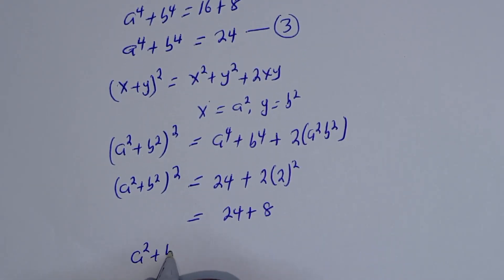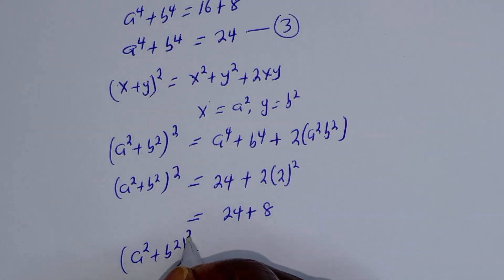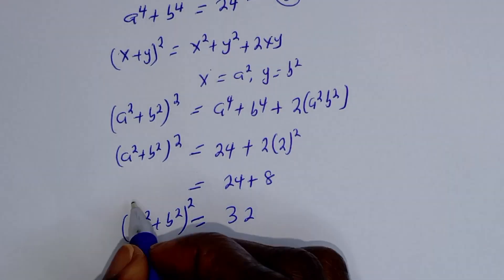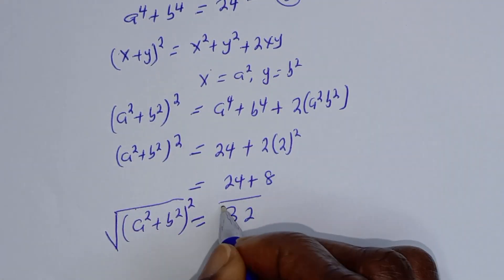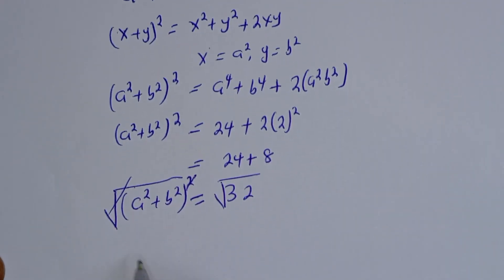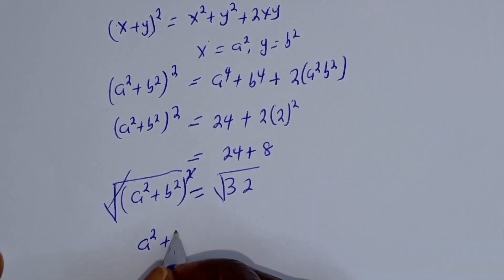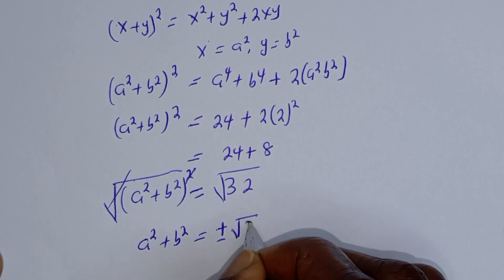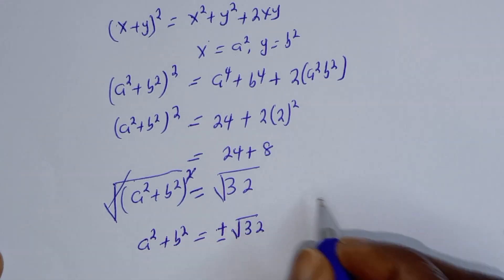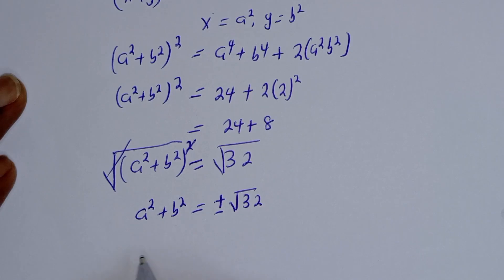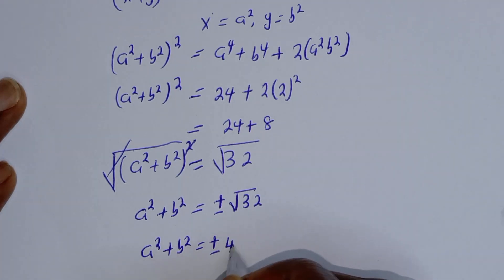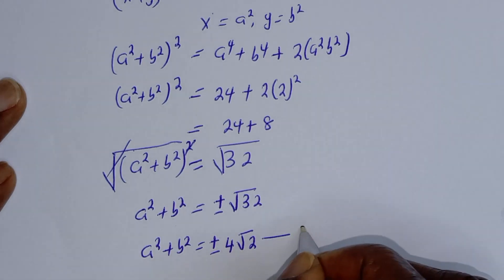(a squared plus b squared) squared equals 32. Now let's take the square root of both sides. The square root cancels on the left, giving us a squared plus b squared equals plus or minus the square root of 32, which is plus or minus 4 root 2. Let's call this equation 4.